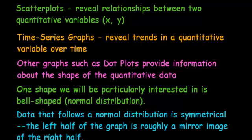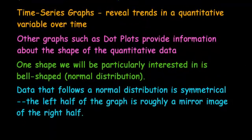Now, data that follows a normal distribution is symmetrical. In other words, the left half of the graph is roughly a mirror image of the right half. It doesn't have to be a perfect graph of symmetry. But if it's kind of close to that, then we will call that a normal distribution. If it's also bell shaped and symmetrical, then that's what we call a normal distribution.